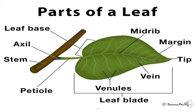Now let us see the parts of a leaf. The first part is the petiole. A leaf has a stalk called the petiole. Look at the image — you can see there is a part of the stem to which the leaf is connected. That thin green stalk connecting the leaf to the stem is the petiole.